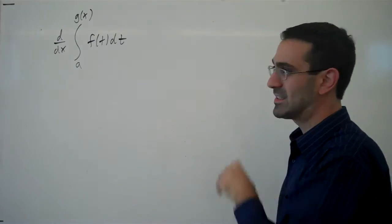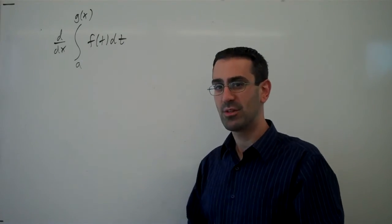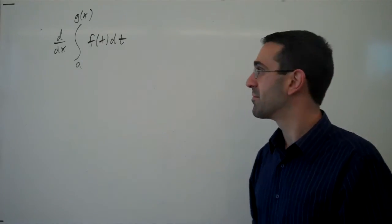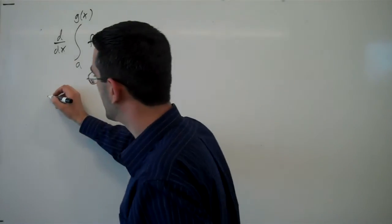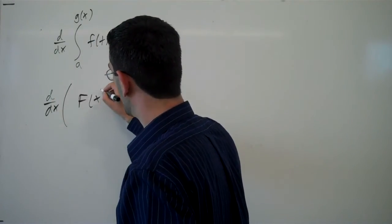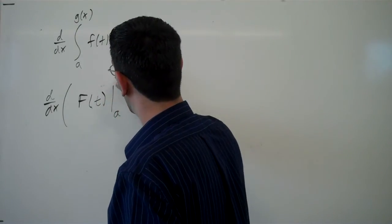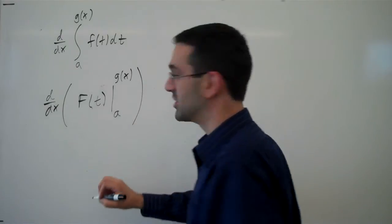Now, as we did before, let's assume that f of t has an antiderivative, and let's see if we can derive what's going to happen. So if this had an antiderivative, then we could find it and evaluate from a to g of x.